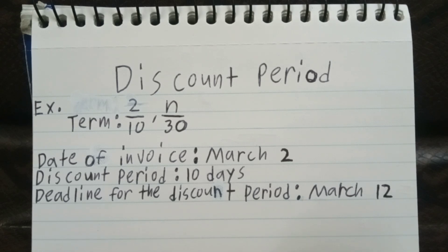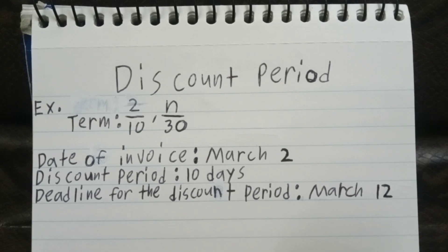So let's start with our date of invoice, which is March 2. The discount period is within 10 days, and the deadline for the discount period is March 12. How did I get the deadline for the discount period? This is very easy — all we have to do is count 10 days from March 2, which gives us March 12. So if the buyer pays between March 2 and March 12, he or she gets the 2% discount.